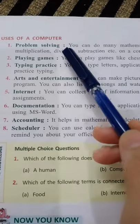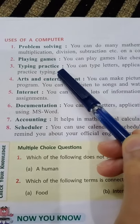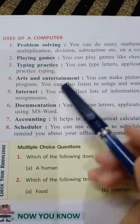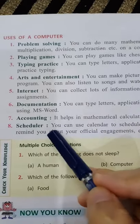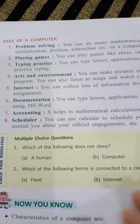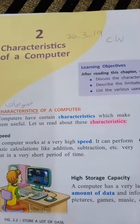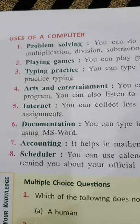To summarize the uses of computers: the first is Problem Solving, the second is Playing Games, the third is Typing Practice, the fourth is Arts and Entertainment, the fifth is Internet, the sixth is Documentation, the seventh is Accounting, and the eighth is Scheduling. This completes Chapter Number 2, which was based on characteristics of a computer, limitations of a computer, and uses of a computer.